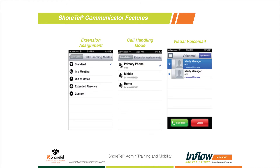If I'm leaving and I want to reassign my extension to my cell phone, or put myself into extended absence because I'm going on vacation, I simply do it right from my mobility application. If someone leaves me a voicemail at work, I can use my mobility application and access visual voicemail — a step up from a simple WAV file based message in my inbox. From there I can play messages and call back, although the voicemail at this point is still stored back on your short tail system.